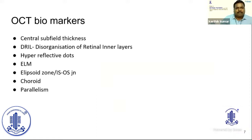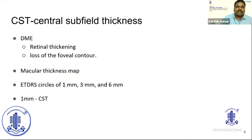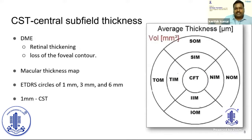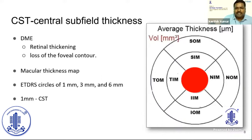The first biomarker everyone discusses is macular thickness. Whenever a patient presents with DME, the first thing that comes to mind is central thickness, and the foveal contour will be lost. On OCT, we look at the macular thickness map using the ETDRS circle, which has three circles: the 1 mm central circle, the 3 mm circle, and the 6 mm outer circle.